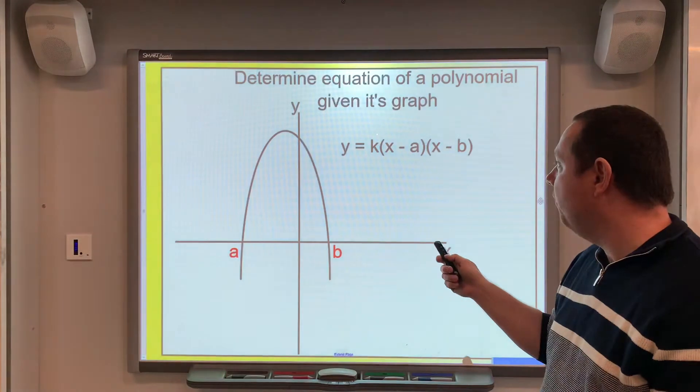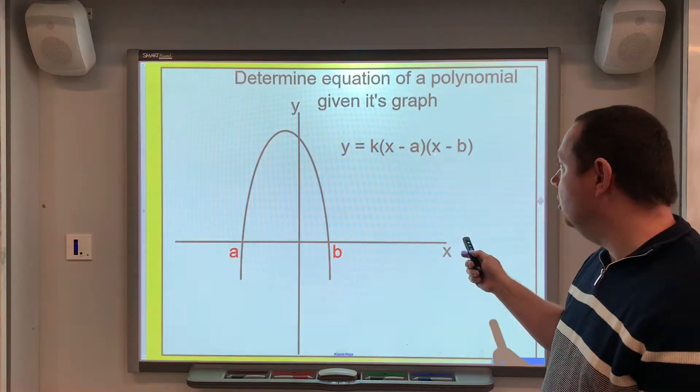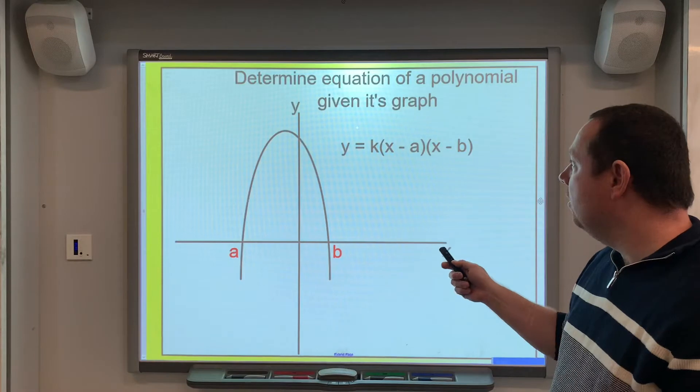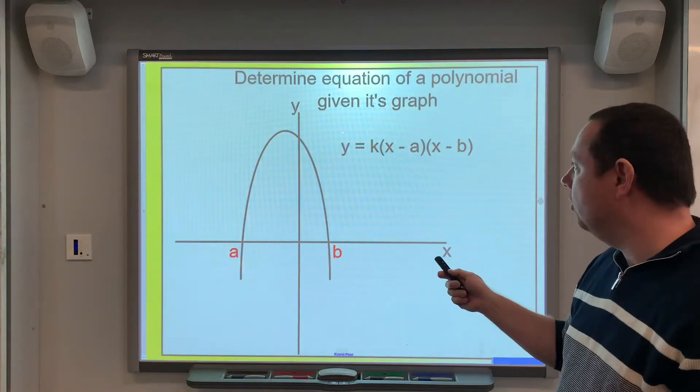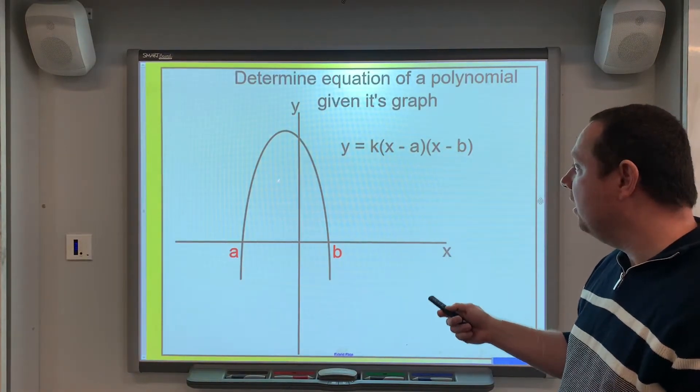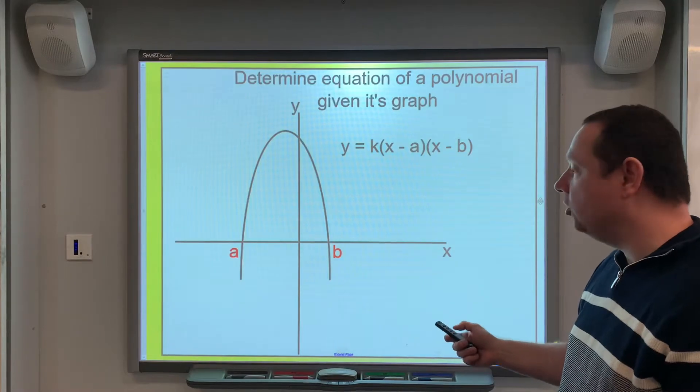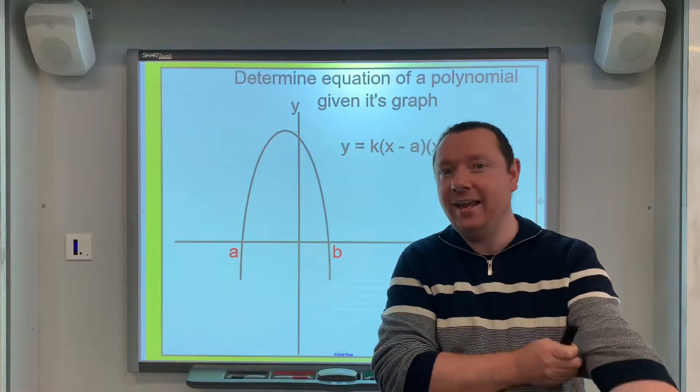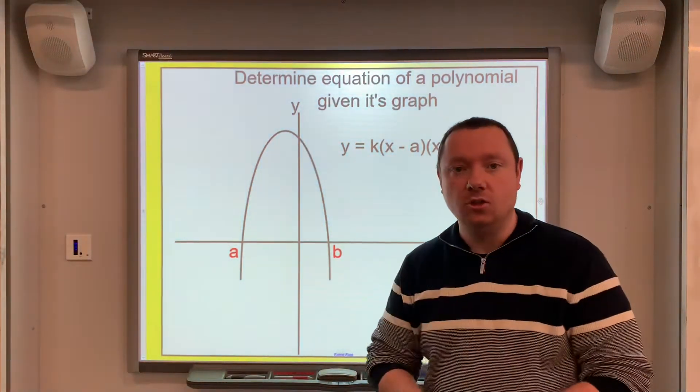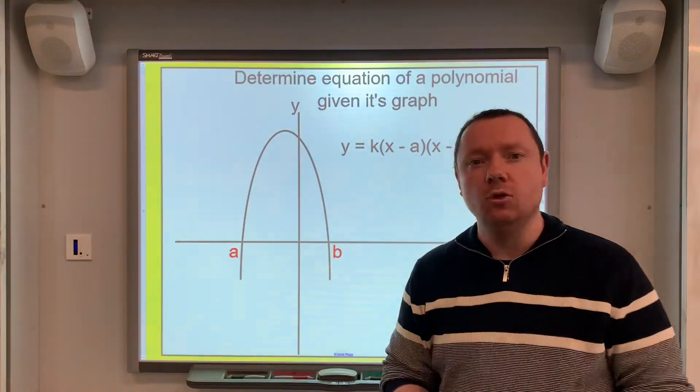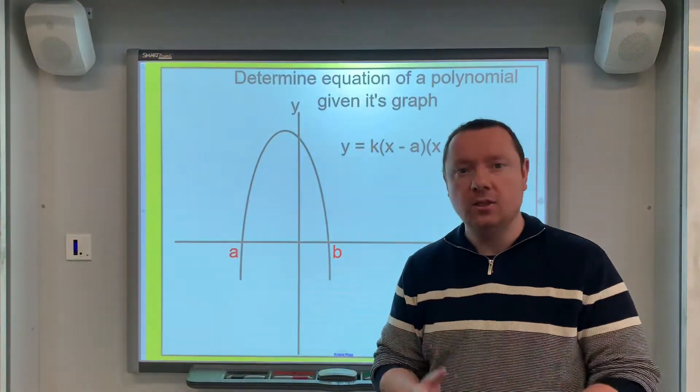But it could be times by some sort of constant k, because this number does not affect the final solutions. So, in general, this is exactly the route we're going to go down. If we're given a graph, as long as we know the roots, we can then know that it's k times the factors times together. And often we'll just have to try and work out k. Let's look at an example.